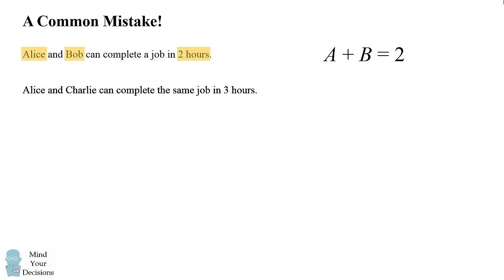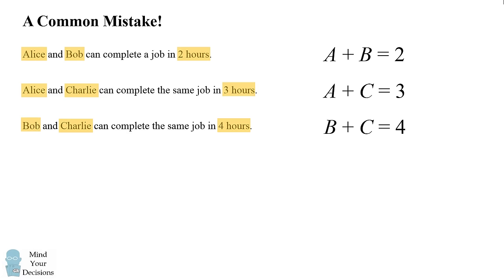Before I get to the solution, let me go over a common mistake in how students get to the wrong answer. They read the first sentence that Alice and Bob can complete a job in two hours and translate the names and the numbers into an equation. They say this must mean that A plus B equals 2. They look at the second sentence that Alice and Charlie can complete the job in three hours and they similarly convert it to A plus C equals 3. The third condition that Bob and Charlie can complete the job in four hours gets converted to the equation B plus C equals 4.